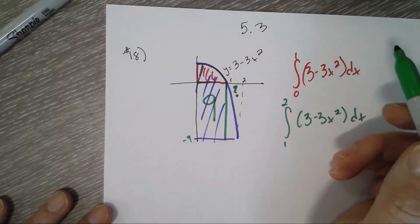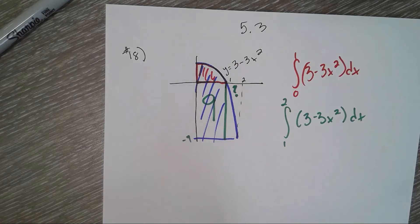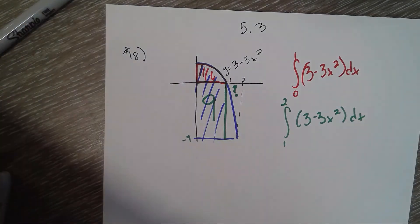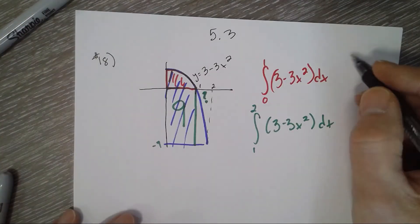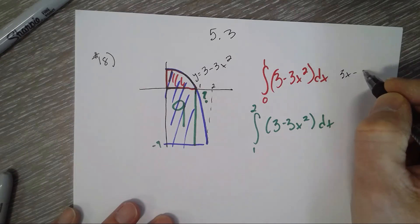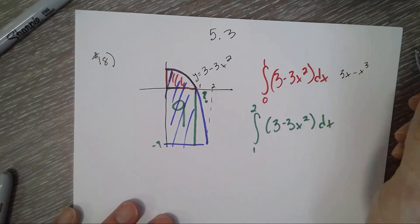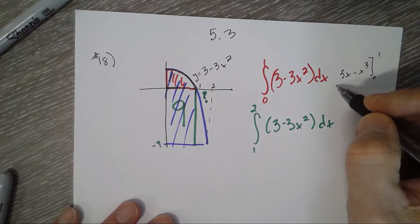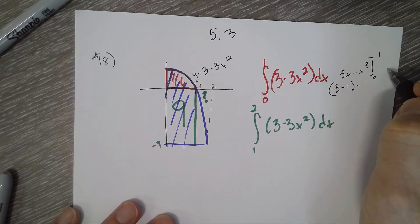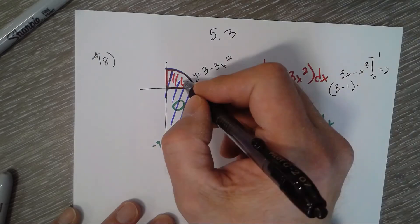All right, so let's find some antiderivatives here. So that's 3x minus x cubed from 0 to 1. So I get 3 minus 1 minus 0, so we get 2. So this area right there is 2.